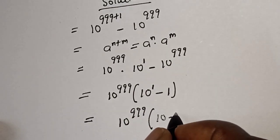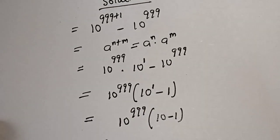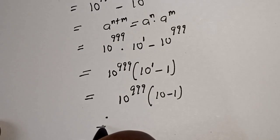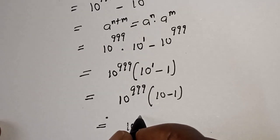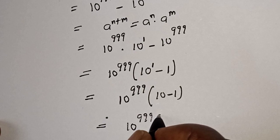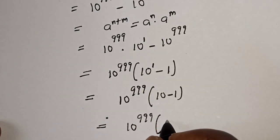This equals 10 raised to power 999, bracket 10 minus 1, that is 9.